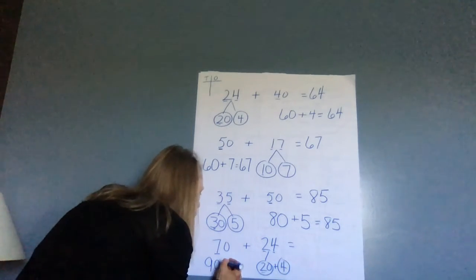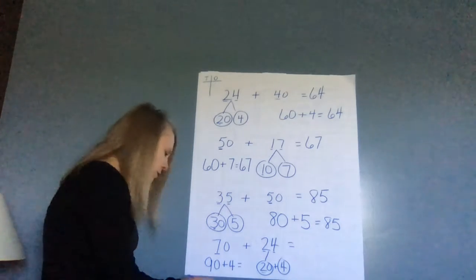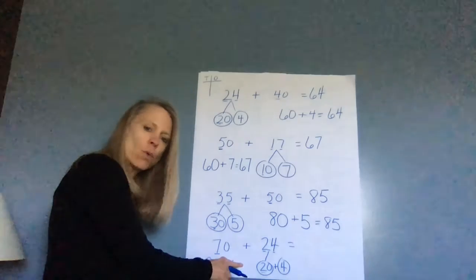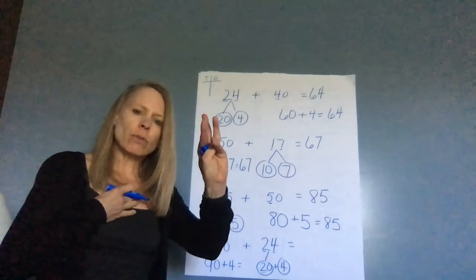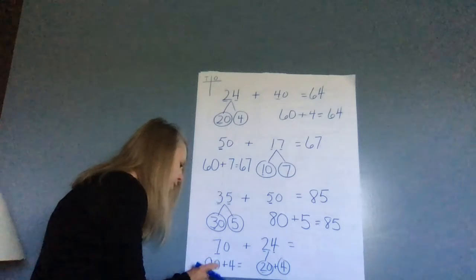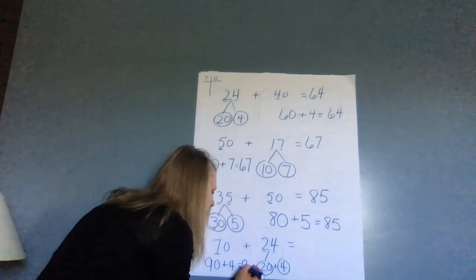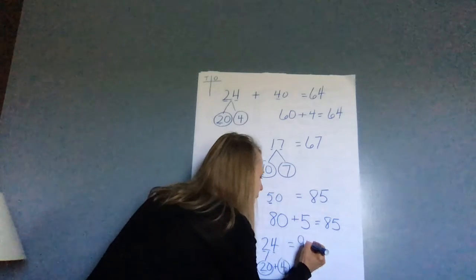Now I'm going to add my ones. So what is my answer? 90 plus four more. I can do 90, 91, 92, 93, 94. Or I take that four and put it right in that zero spot. So I have 94. So 70 plus 24 is 94.